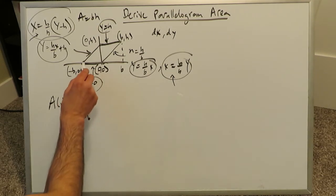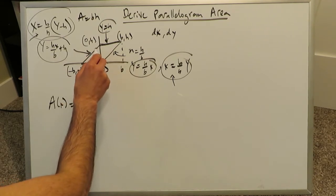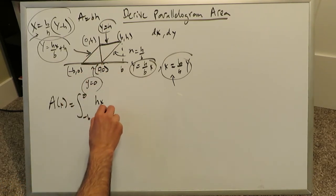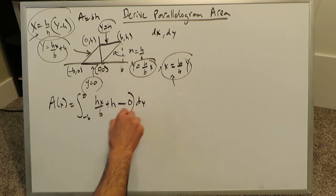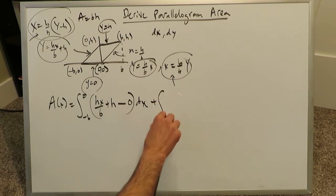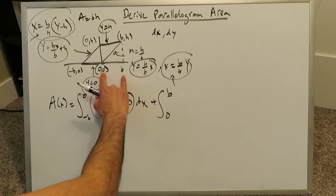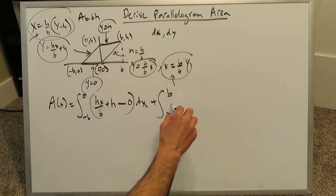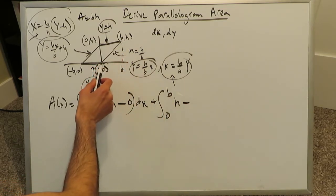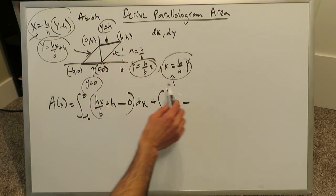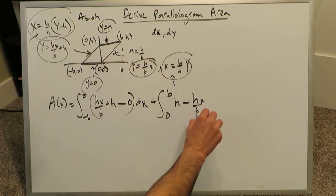From minus b up to 0, from this point to this point, and this right here is my top boundary curve, which is what? hx over b plus h minus, here's my lower boundary curve, which is a 0, meaningless, plus, from 0 up to b, I have this top boundary curve, which is a horizontal line, y equals h. Minus, and then I have this slant line, which is hx over b dx.